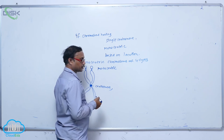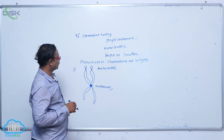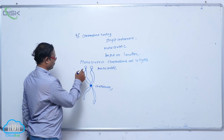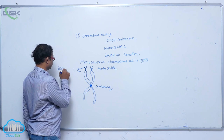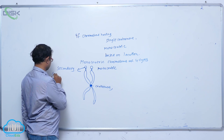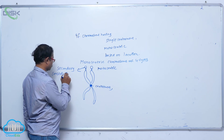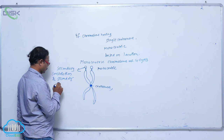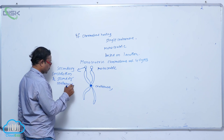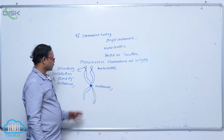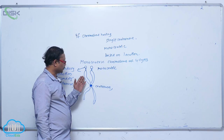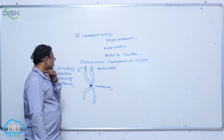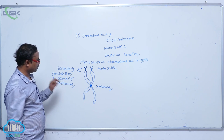In some chromosomes, non-staining parts are present at a constant location. These are known as the secondary constriction or secondary centromere, and they are found at a constant position on the chromosome.